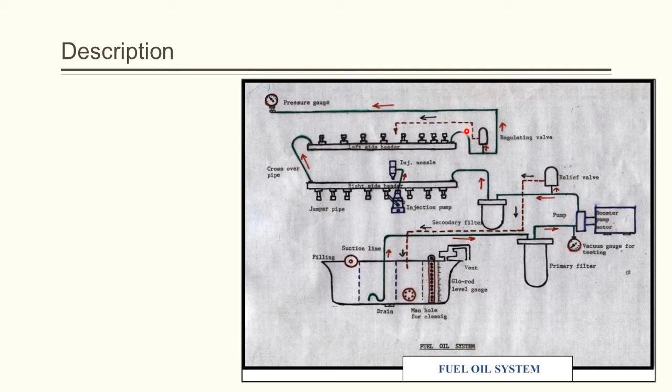The steady oil supply is maintained to the pumps at a pressure of 3 kg per square centimeter. The regulating valve on the left side of the fuel header takes care of excess pressure over 3 kg per square centimeter, bypassing the extra oil back to the tank. A gauge connection is taken leading to the driver's cabin for indicating the pressure of the fuel oil. Thus, the fuel feed system keeps fuel continuously available to the fuel injection pumps, which the pumps may use or refuse depending on the demand of the engine.